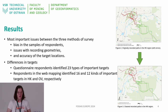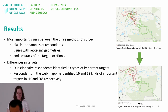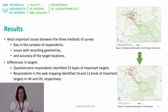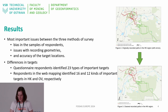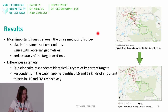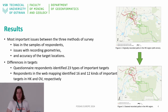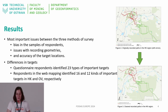The most important issues between the three methods of survey are bias in the sample of respondents, issues with recording geometries — as you can see in these pictures — and the occurrence of the target locations and differences in the targets.